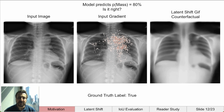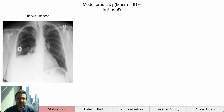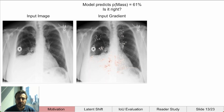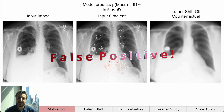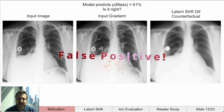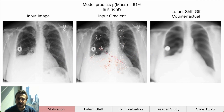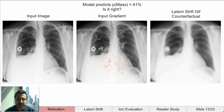Let's take a look at another positive prediction of mass. When we generate the counterfactual, it is unclear where the mass is — maybe the network is confused. The ground truth label for this image is false for mass. Using this counterfactual animation, we are able to gain a much better understanding of why the model made its prediction, which allowed us to doubt it more.